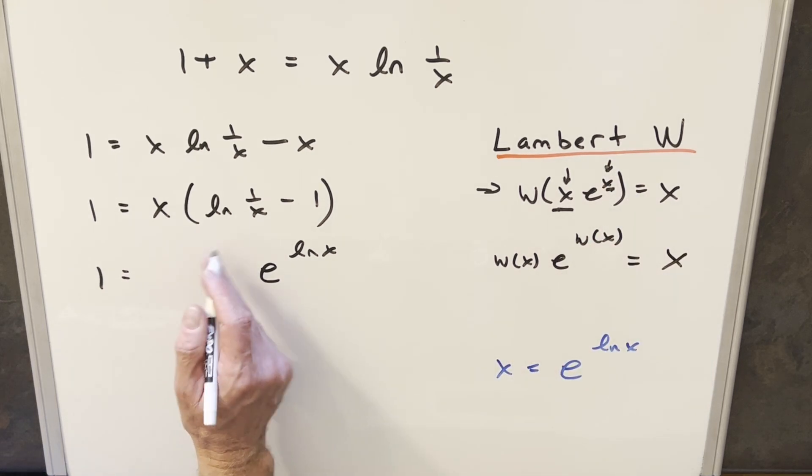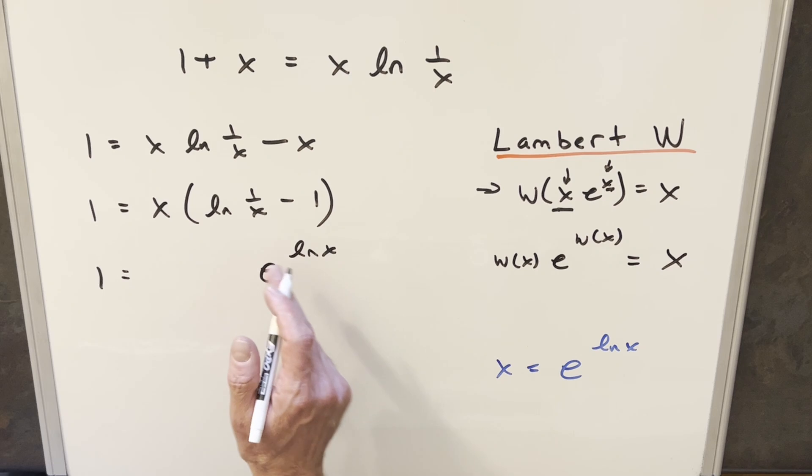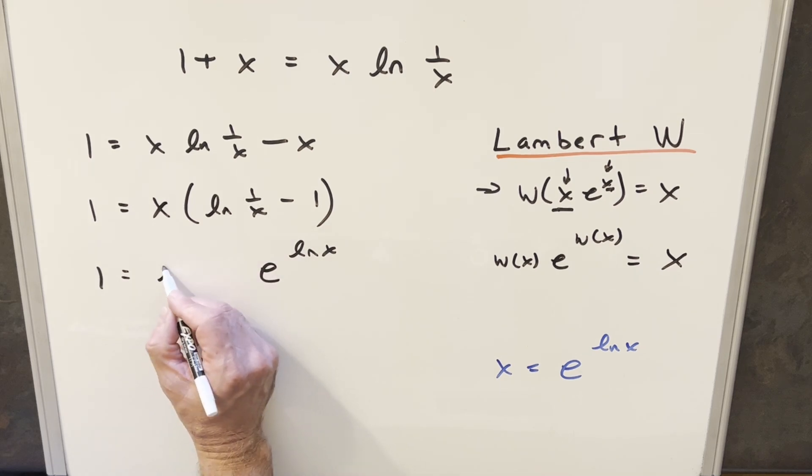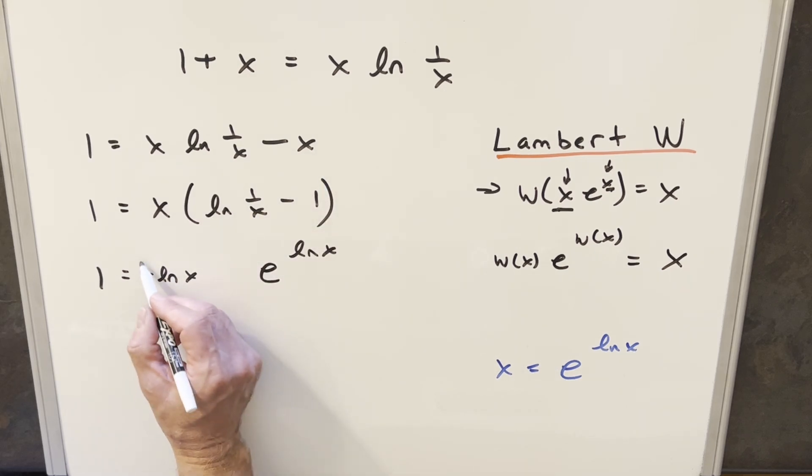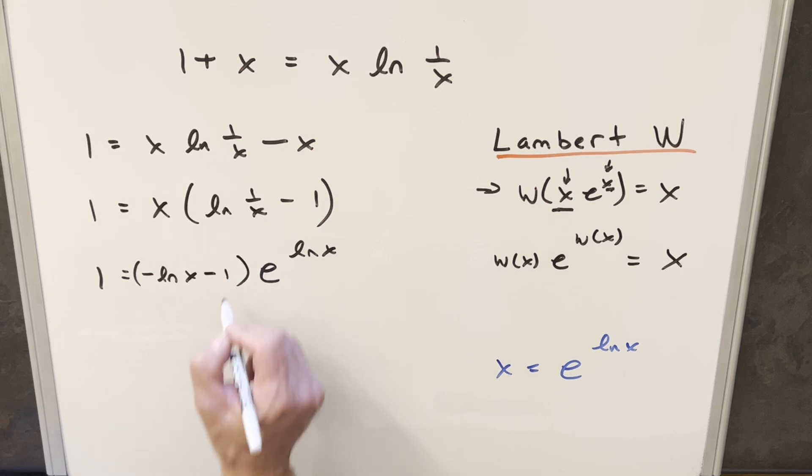So for this part here, we would like this to be like this. One thing I can do instead of writing natural log 1 over x, we can write this as natural log x and think of this as x to the minus 1. And then with the log properties, we can bring that out front and write it as minus ln x minus 1.